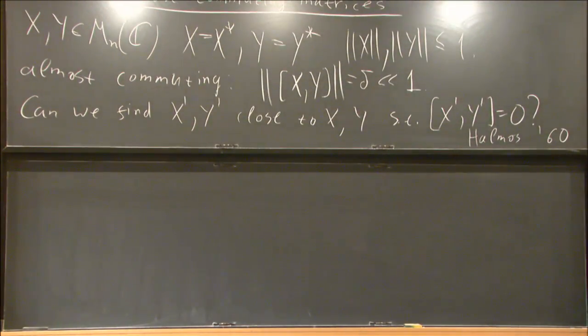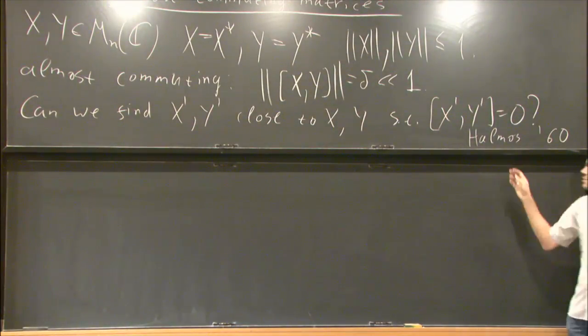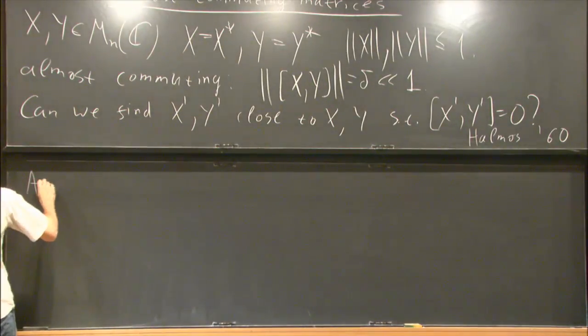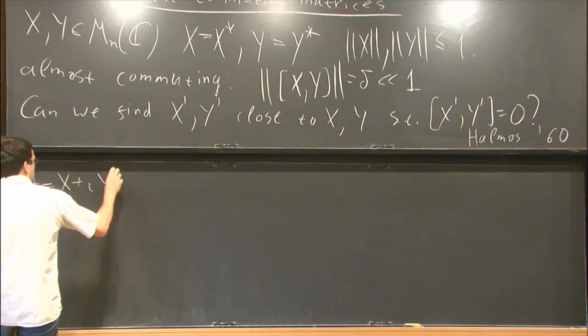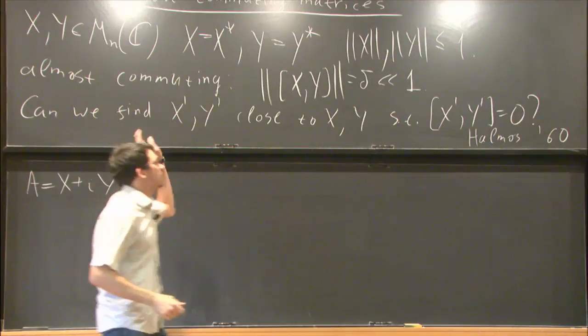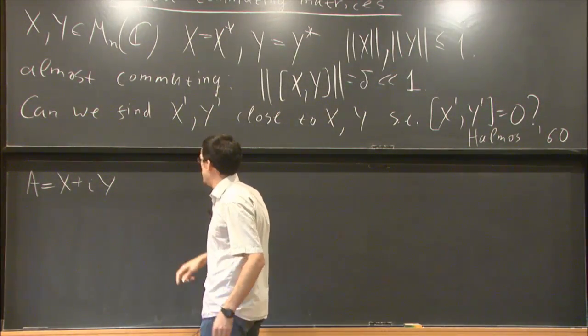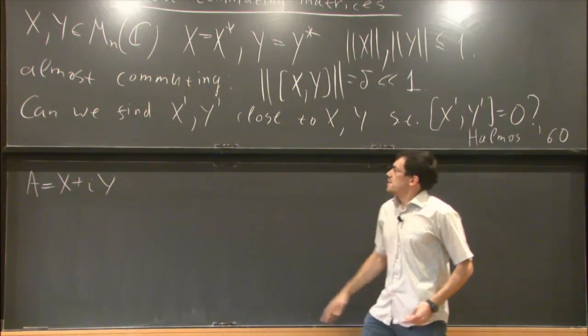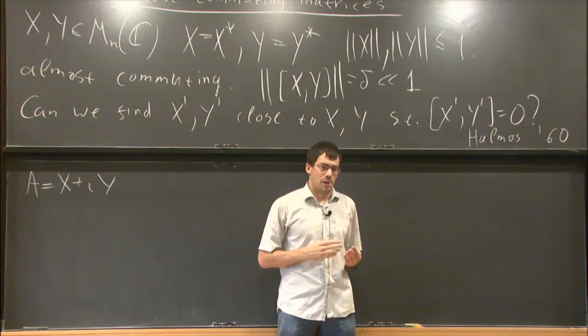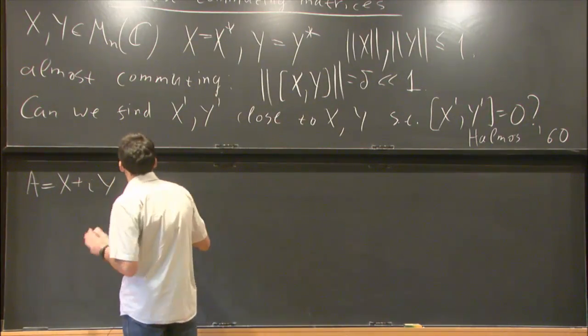You can also reformulate it in a more simple way in terms of one matrix. If you look at the matrix A equals X plus iY, then basically the commutator of X and Y is just the self-commutator of A, and X and Y commute if and only if A is normal.